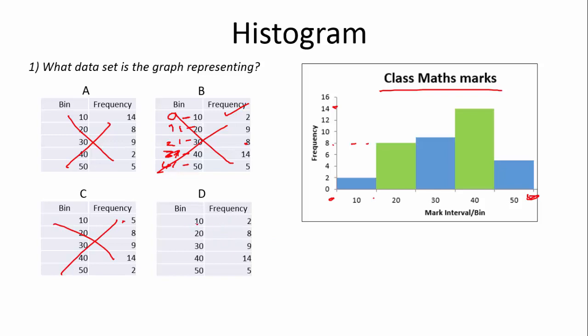D, there's bin 10. Let's just check this. It's 2. That's right. 20 is 8. That looks right. Then we have 9, 14, and 5. That looks about perfect.